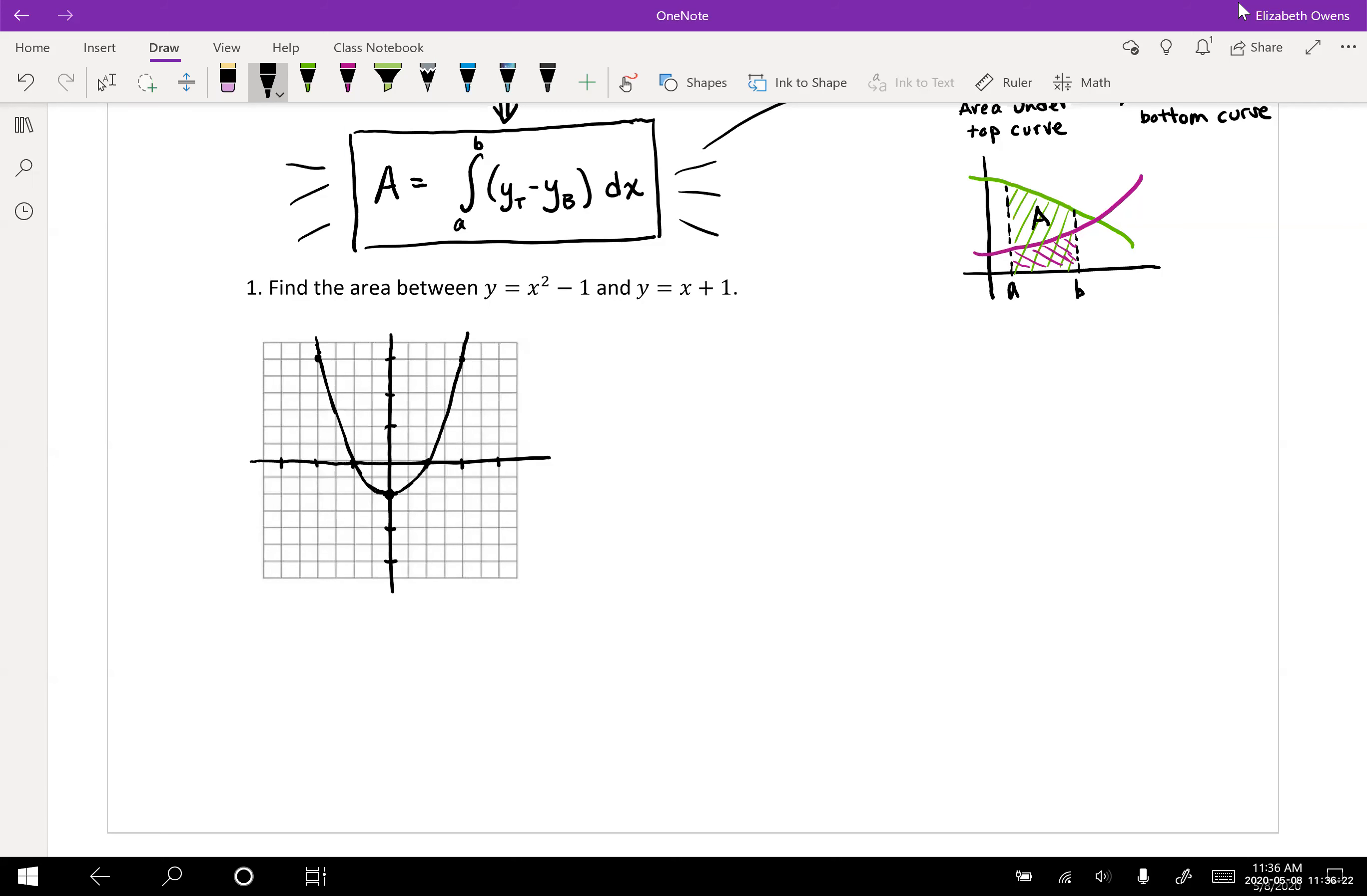Our second function is the line y equals x plus one. There's our intercept of one and a slope of one. There is our line.